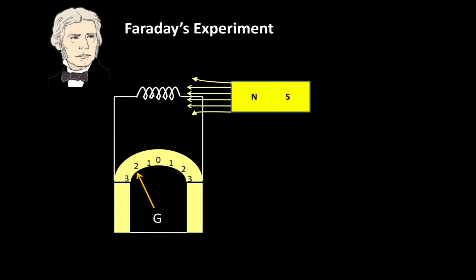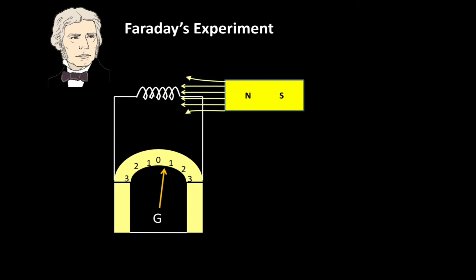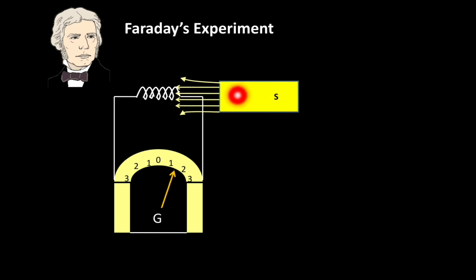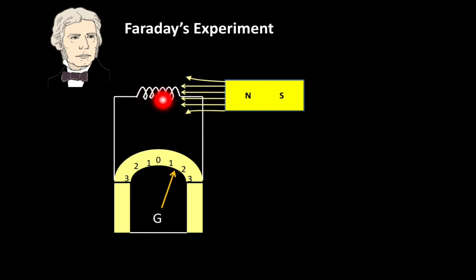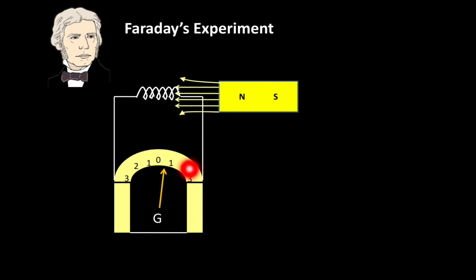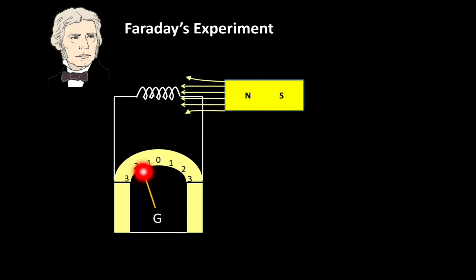This means that to have continuous deflection in the needle, there must be continuous movement of the magnet. When the magnet is moved near to or away from the conductor, the flux linking with that coil is changing with respect to time. When the flux linking with the coil changes with respect to time, there is induced current in the coil, which causes deflection in the needle. The direction of that induced current also changes after a certain time interval.